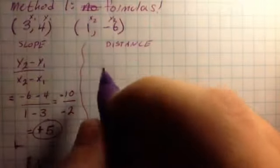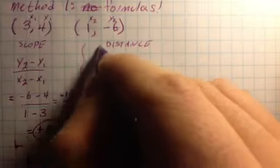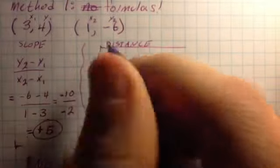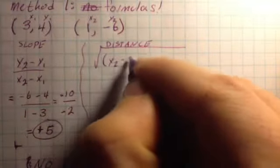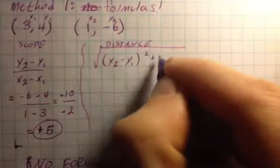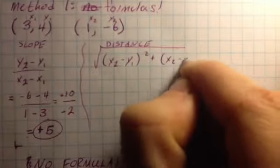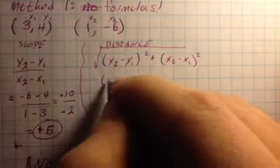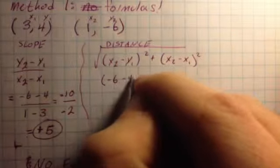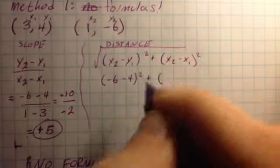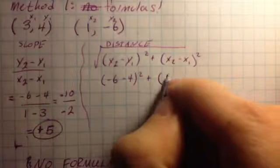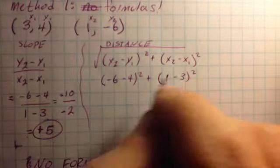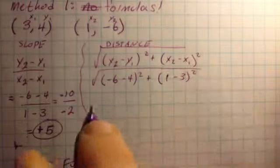Alright, distance. I've got to use the giant formula: square root of (y2 minus y1) squared plus (x2 minus x1) squared. Let's plug all the numbers into that. Negative 6 minus 4 squared plus 1 minus 3 squared, all under a giant square root.